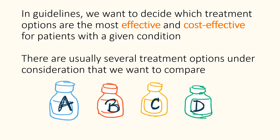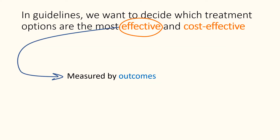In guidelines, we want to decide which treatment or intervention options are the most effective and cost-effective for patients with a given condition. There are usually several treatment or intervention options under consideration that we want to compare. To measure effectiveness, we start by selecting a specific outcome, for example depression score.